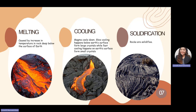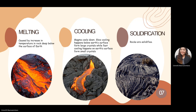Next we have melting, cooling, and solidification, which are essential for the formation of igneous and metamorphic rocks. Melting is a process caused by the increase of temperature in rocks deep below the surface of the earth. Once a type of rock has been melted and subducted into the earth, it will become molten rock and form a magma reservoir of a volcano.